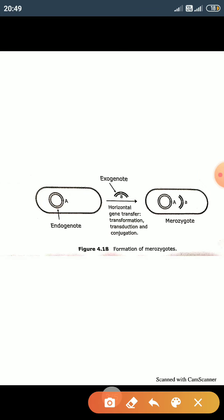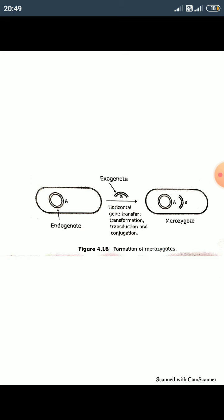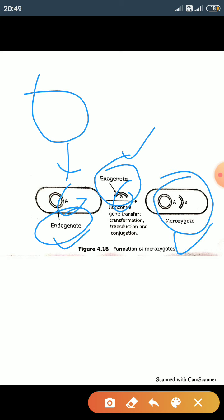The genetic material that is transferred from one bacterial cell to another is known as the exogenote. The exogenote which integrates into the bacterial chromosome is known as the endogenote. The formation of the exogenote and endogenote together forms the merozygote, and this is what we call genetic recombination — the genes of two bacteria become recombinant.